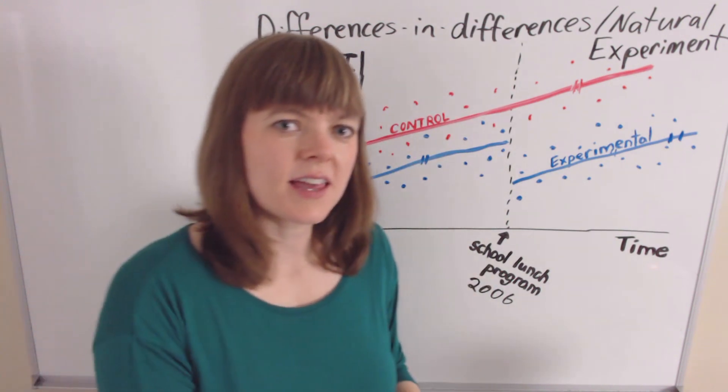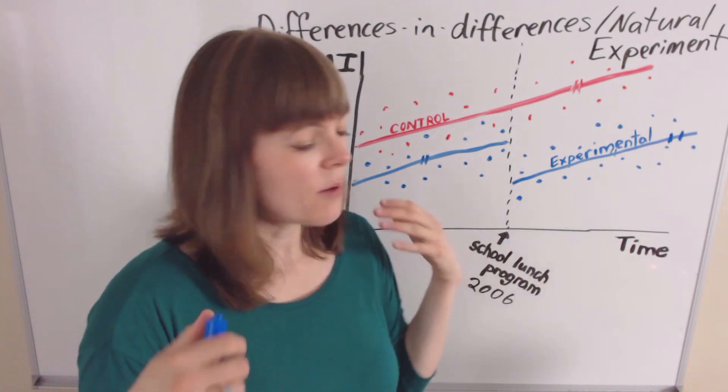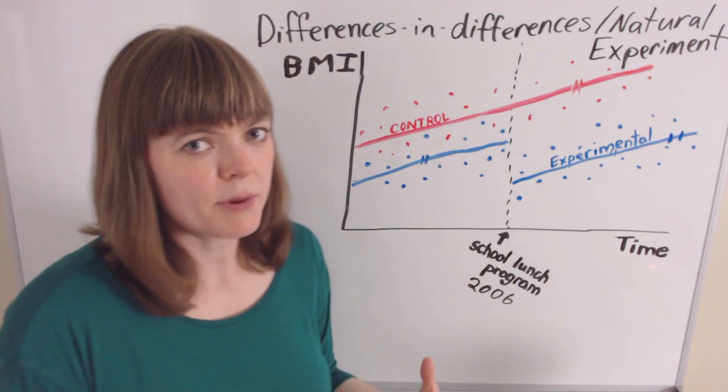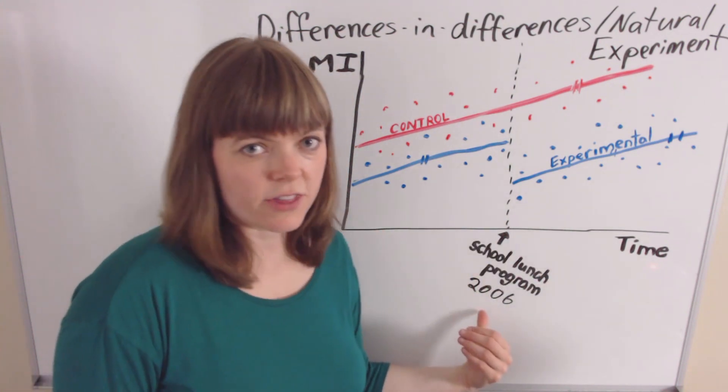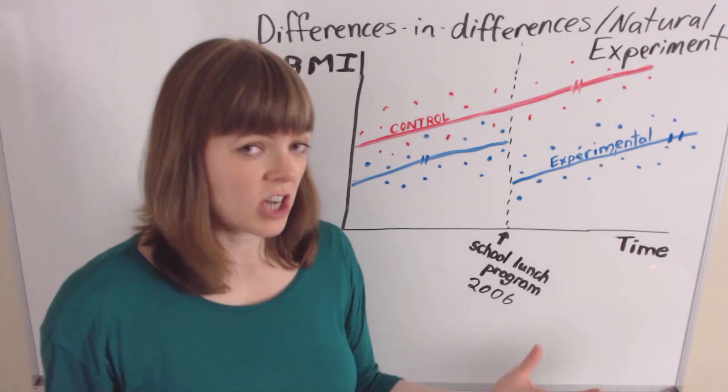And that's the tricky thing with a natural experiment, is that it's taking place at a particular point in time. And we know that there's lots of things that happen over time. Many different things happened in 2006. This was not the only national change in 2006.